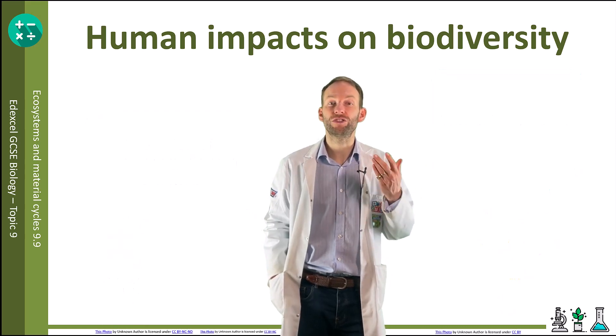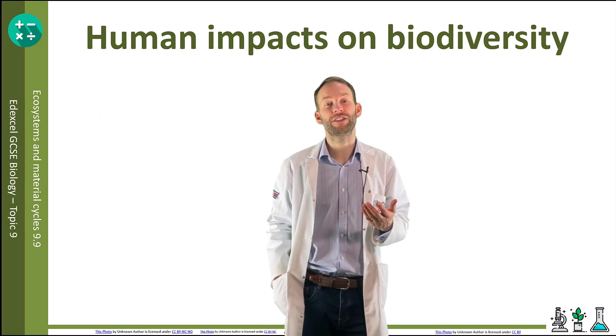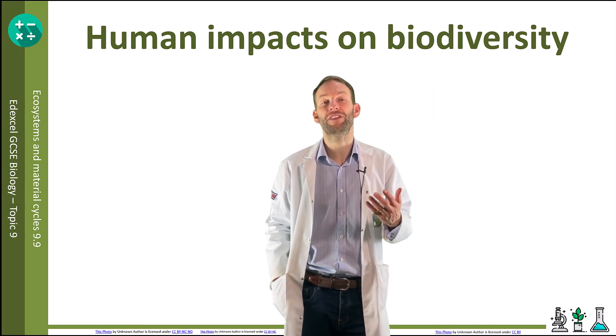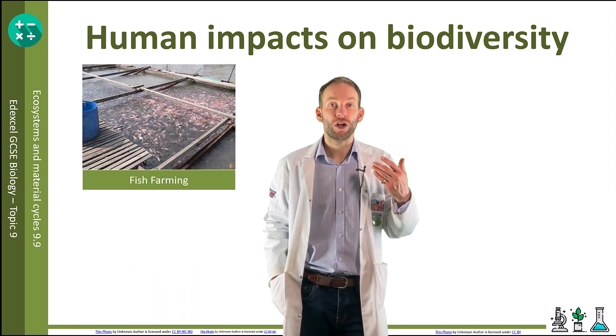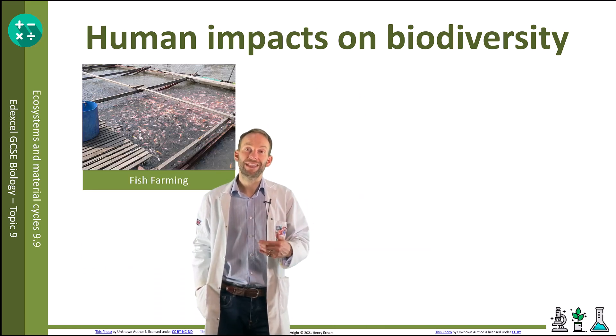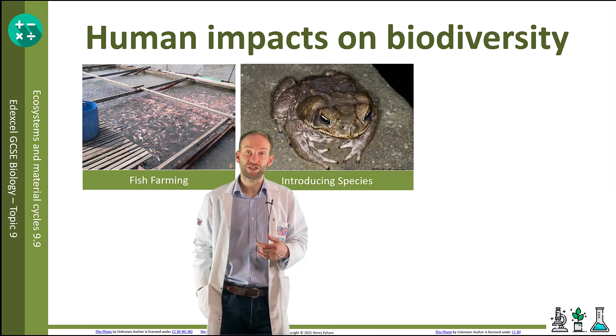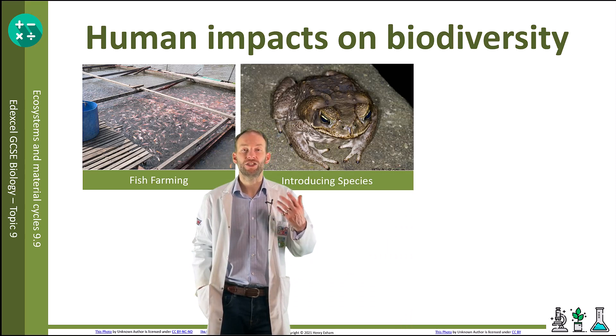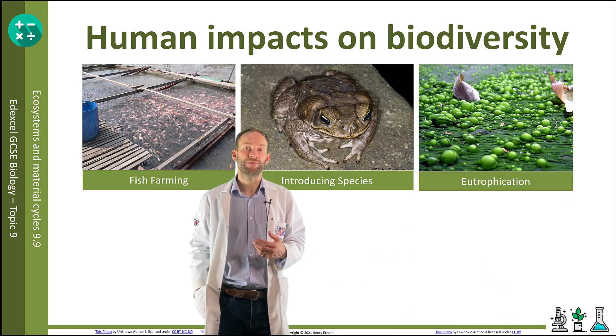Human activity can reduce biodiversity, and we'll look at three examples of how this can happen: fish farming, introducing non-indigenous species, and eutrophication.